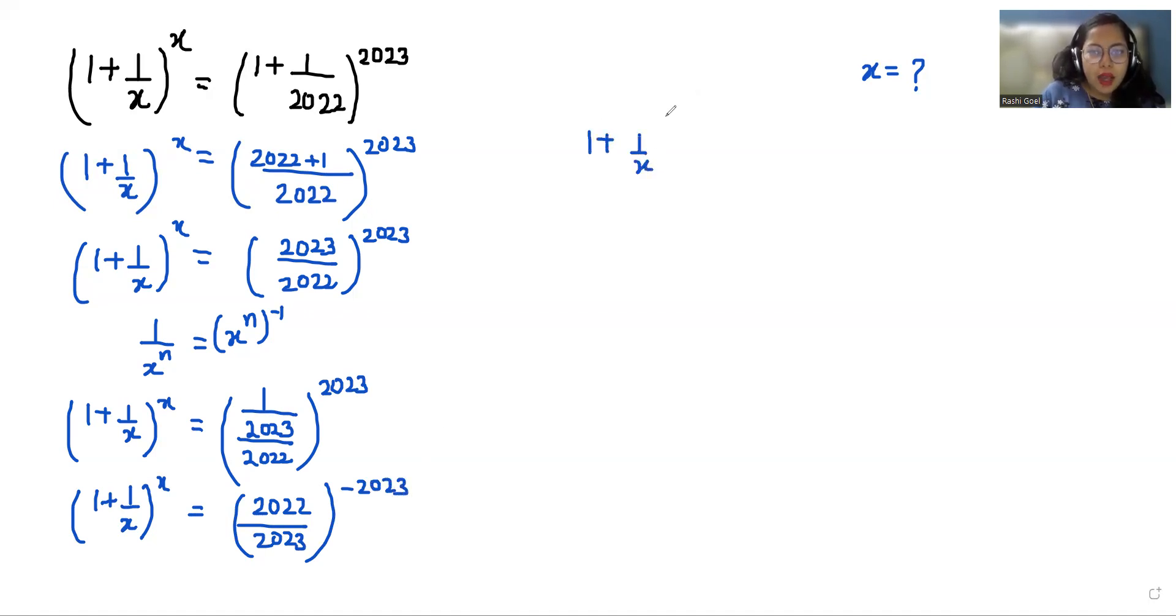Now we can write 2022 as 2023 - 1, so (2022/2023)^(-2023) = ((2023-1)/2023)^(-2023) = (1 - 1/2023)^(-2023).